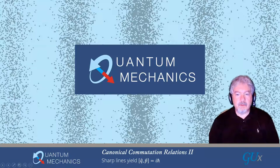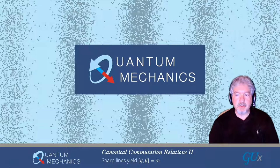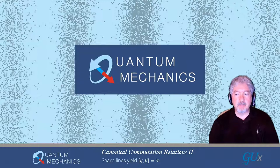Welcome to Module 5, Lecture 3. This is Part 2. We're going to be deriving the canonical commutation relation — the commutator between position and momentum.